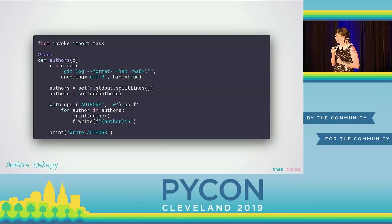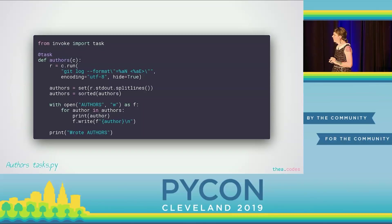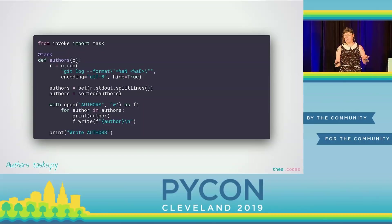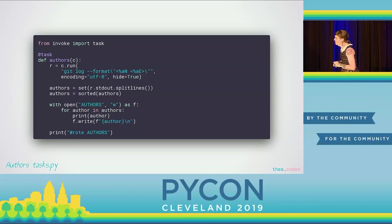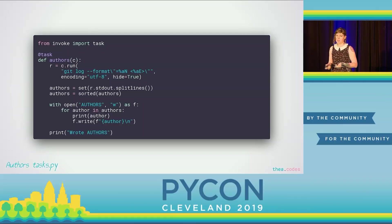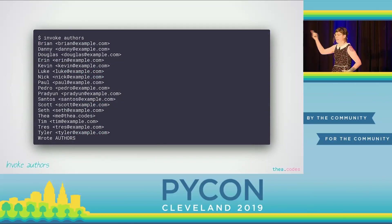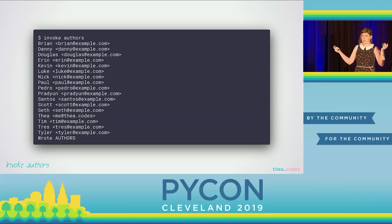This example is from Pip. They have a lot of contributors, and they used to have this problem where they'd ask contributors to manually add themselves to the authors file for attribution — which is a really nice thing to do. The problem is they kept forgetting to do it. What this task does — and it's super simplified — is use Git to find all the authors by their commits and then compile an authors file. This way you can run this as part of a release process and not worry about leaving anybody behind.